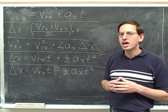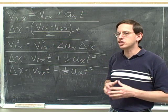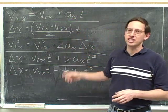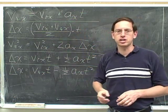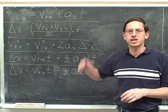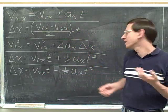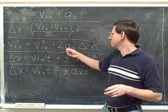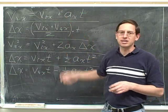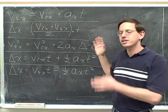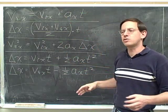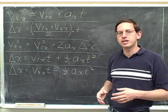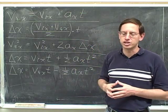You can see that because if the acceleration is changing, you wouldn't know what to plug in for the acceleration. If the acceleration could be one number at one point and a different number at another point, we couldn't really use these equations because we wouldn't know which of those numbers to plug in. So these equations are really assuming a constant and unchanging acceleration.